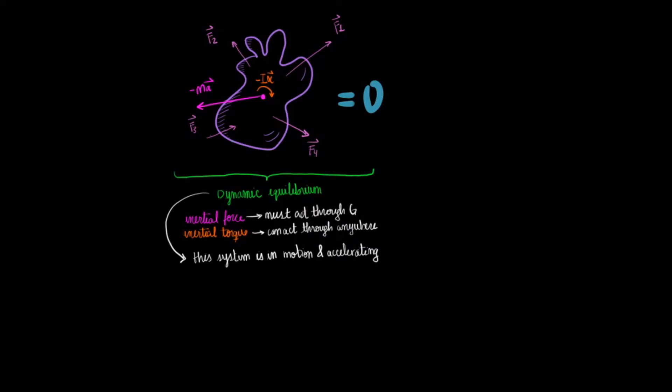The D'Alembert's principle of inertial forces outlines this concept. The idea here is that you can transform an accelerating body into a body that is in static equilibrium just by including the inertial force and inertial torque in that system.